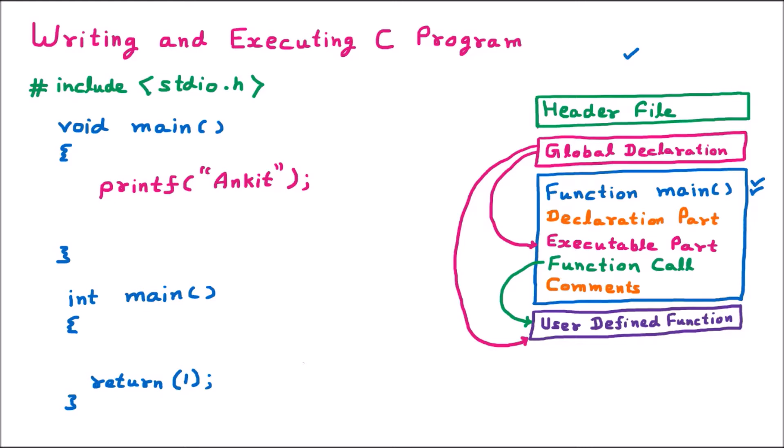If you are making the program with int main, the programming will be totally the same, but only we have one extra line which is return. So if you are providing int, then return will be extra, otherwise the whole code will be the same. We take void main as the default program. So this is our first C program which is ready. We have void main as the driving function, inside that we have the executable part which is printf Ankit, and on the top we have the header file.